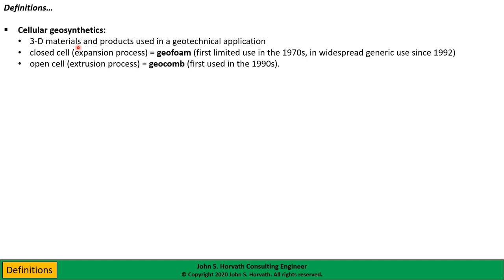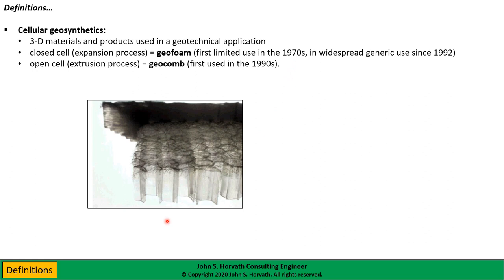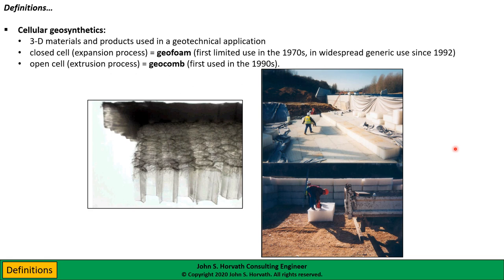We also have open cell cellular geosynthetics created in the extrusion process — we call these geocombs. These are very interesting materials in their own right; they were first used in the 1990s, apparently developed in France, and for some peculiar reason they've not caught on around the world. They're basically an extruded polymeric material, usually cut into panels or blocks, with a non-woven geotextile factory laminated to both the upper and lower face — used very similarly to EPS block geofoam, which we'll be focusing on in today's presentation.